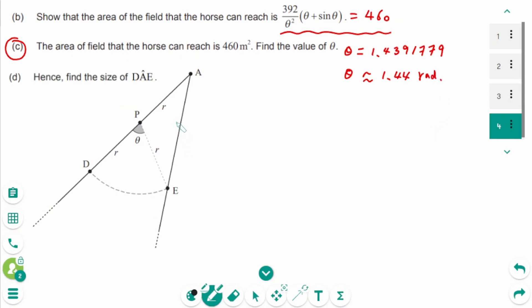The triangle APE is an isosceles triangle, so these angles are the same. Then alpha plus alpha equals theta. So 2 alpha equals theta.